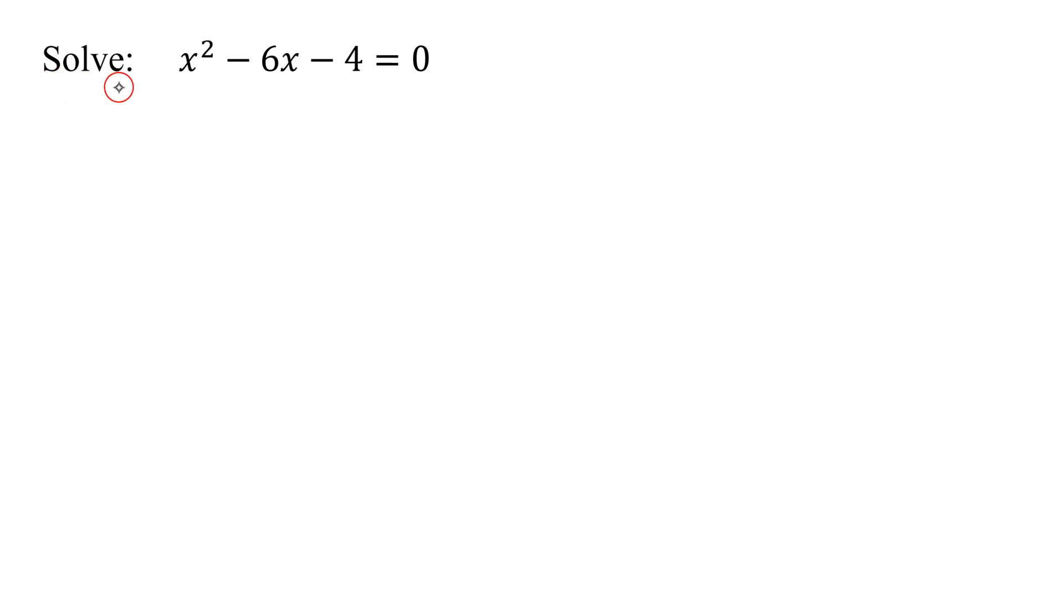In this example, we need to solve the equation x squared minus 6x minus 4 equals 0. What type of equation do we have? What's the highest exponent on any of the x's? It is a 2, therefore this is a quadratic equation.